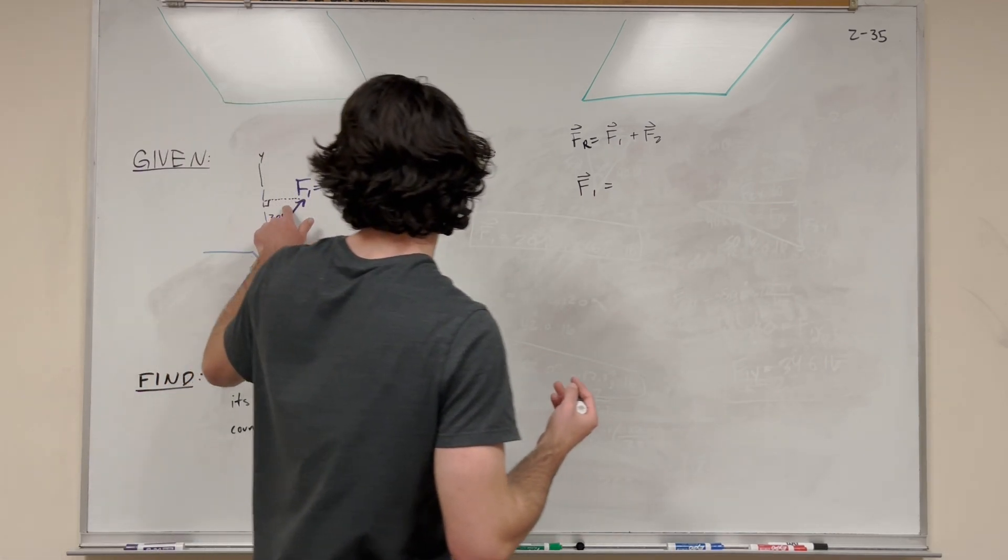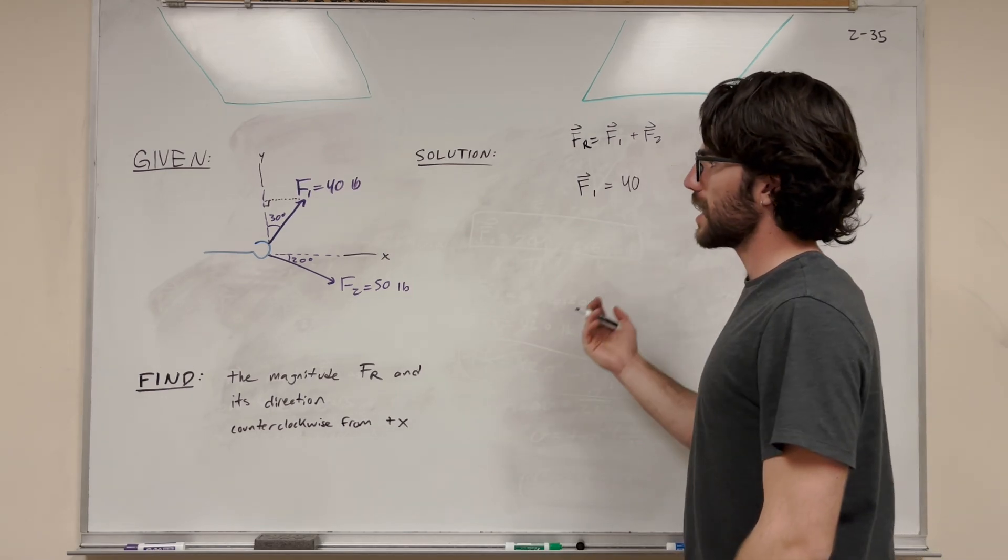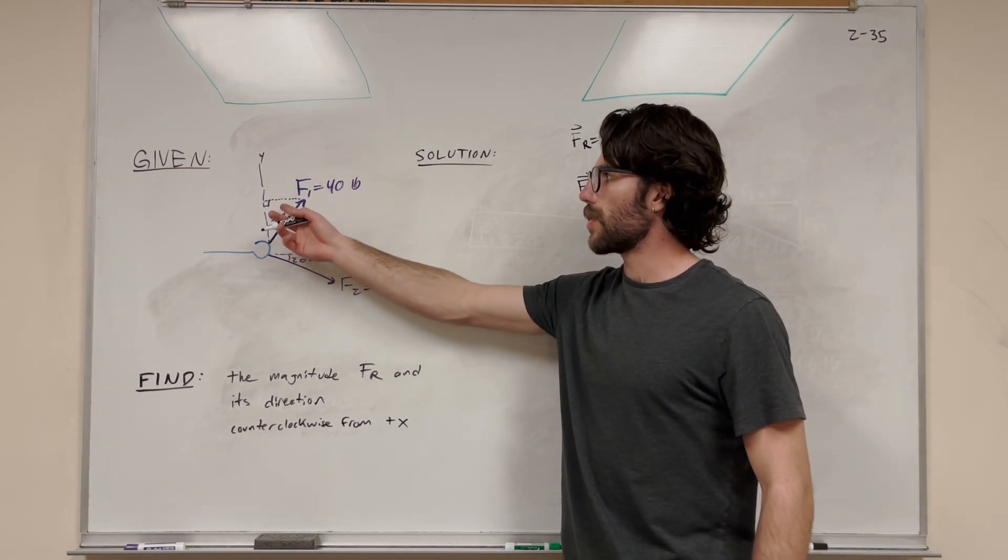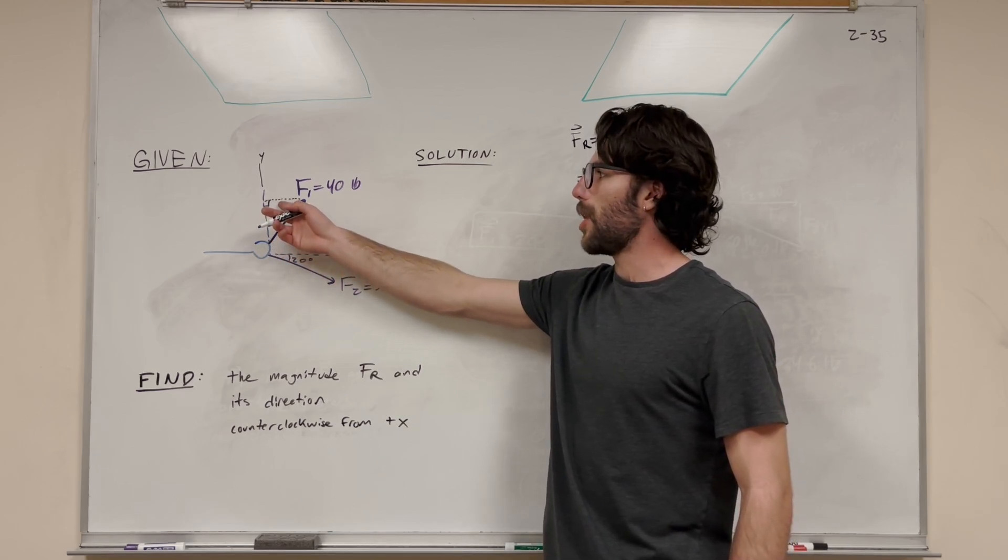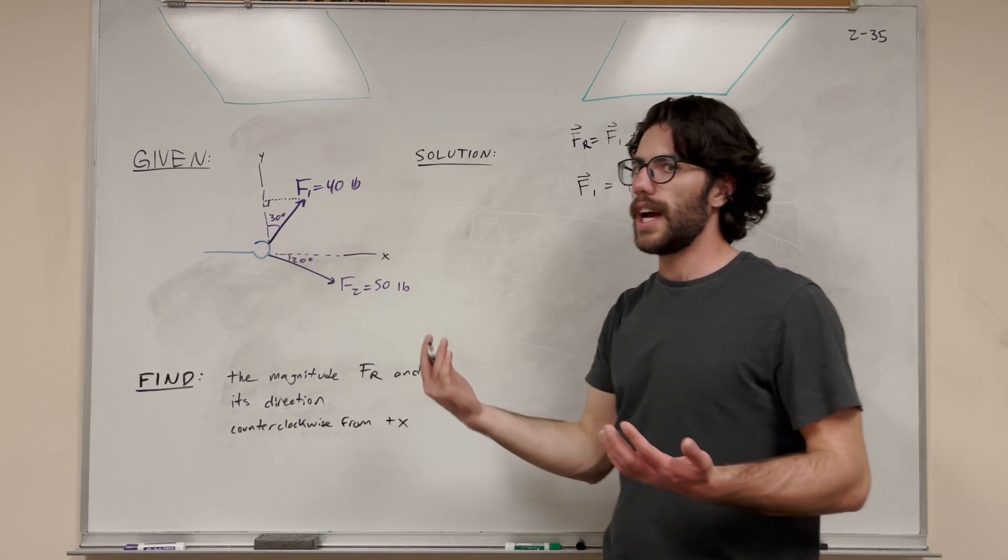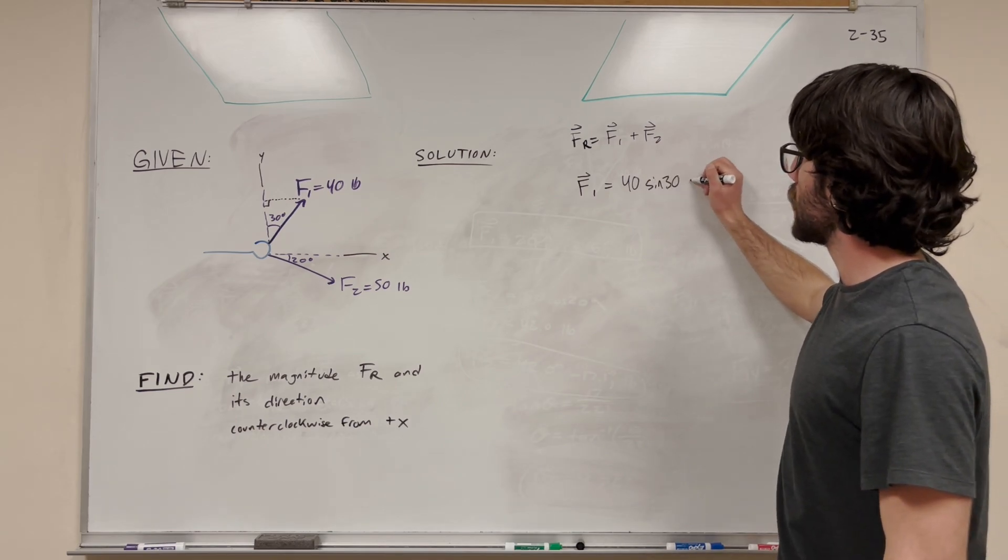So if we're trying to find force 1x, we're trying to find this one here. We're going to take the hypotenuse, 40 pounds, and we're going to attach it to what we need. We're looking at the opposite here, right? It's the angle. It's the sine on the opposite side of the angle. So we're going to attach a sine of 30. And this is our i component.